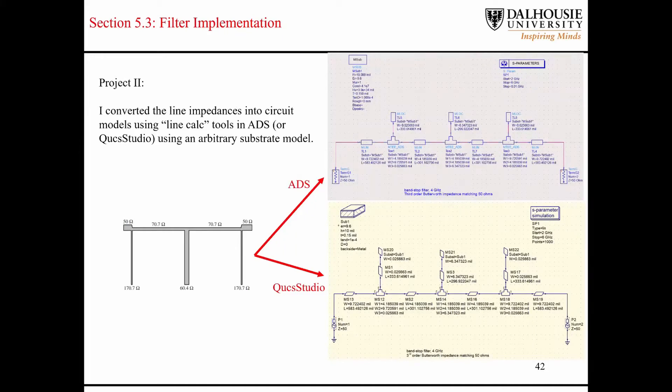I took it an extra step. I laid out each of these filters in ADS, which is the top schematic that you're seeing there, and then I did it again in QUCS Studio just to compare the results. The way that I was able to find the lengths and widths of all these different transmission line segments was I was able to use information from this plot here.